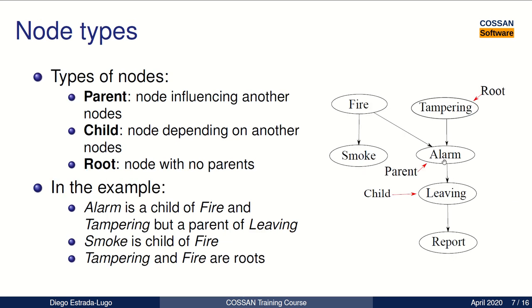For example, we have the parents that are those nodes that are influencing other nodes, which are called the child nodes. And then the root nodes are those that have no parents. So in this example, as we can see, alarm is a child of fire and tampering, but it's also a parent of leaving. Also smoke and report are only child nodes, but fire and tampering are also root nodes only, because they have no parents.